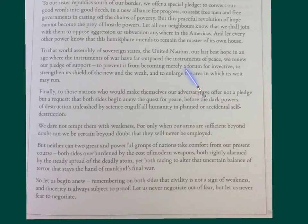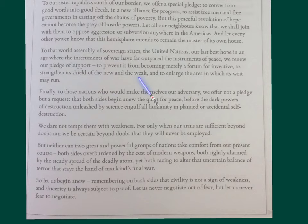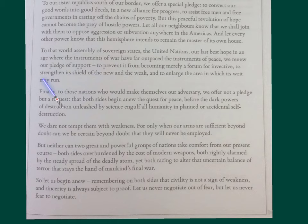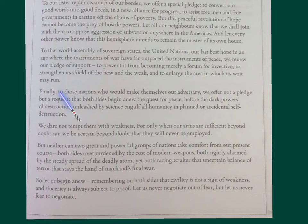He's doing another pledge — 'our pledge of support.' Look — there's a pattern of this word being repeated. 'To prevent it from merely becoming a forum for invective, to strengthen its shield of the new and the weak, to enlarge the area in which its writ may run.' This is all meant to be optimistic talk for his inaugural speech. 'Strengthen its shield' — 'shield' again has connotations of defence and protection. There are lots of discourse markers here at the starts of paragraphs; that's why it's a spoken text, and that's why the discourse markers are important.